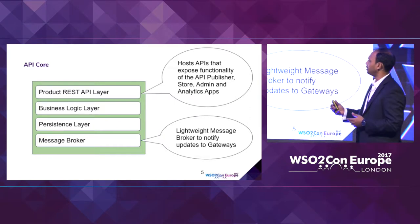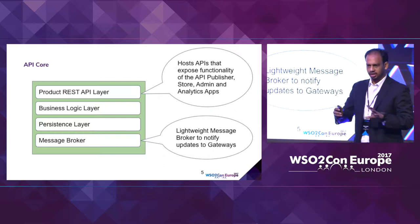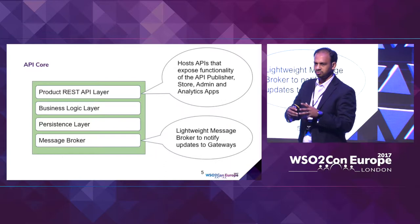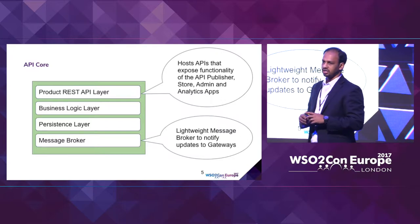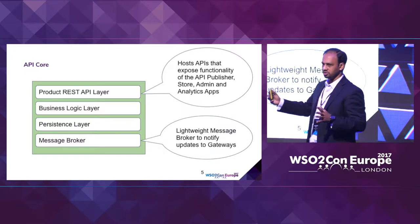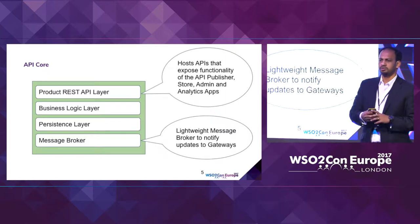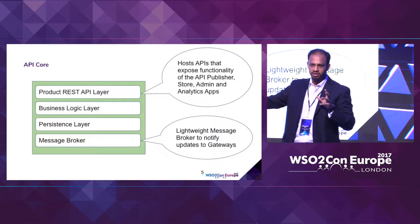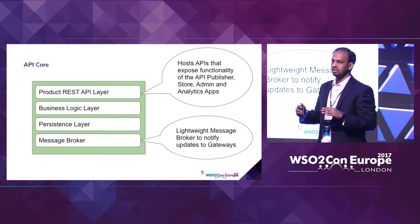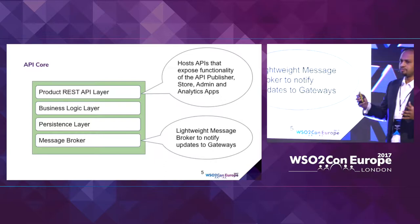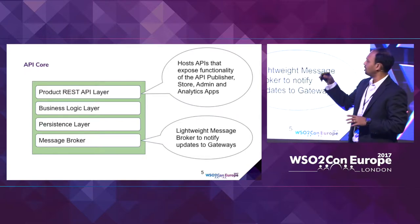The API core is a set of services secured using OAuth 2. We have a REST API layer which exposes all of the product functionalities — from API design to application development and all CI/CD aspects — as services secured using OAuth 2. We have the traditional business logic layer and persistence layer in the same set of microservices. Interestingly, we also have an embedded message broker. In the microservices world, it's important to keep communication between different components loosely coupled, so we've developed an embeddable message broker component built into the API core.